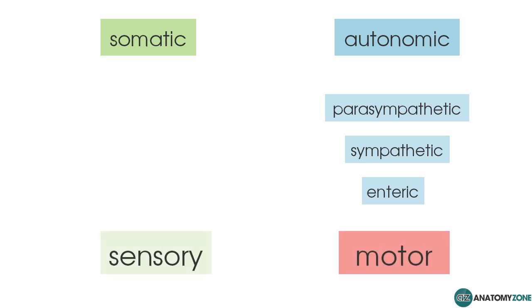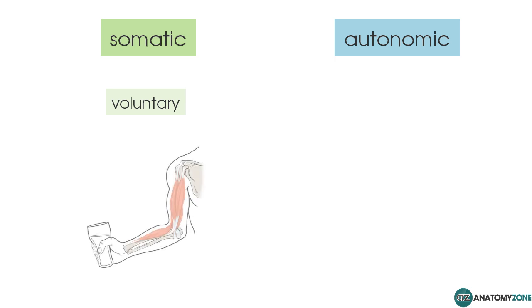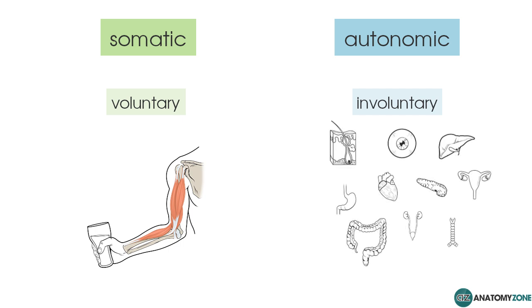The somatic nervous system is responsible for conscious perception and voluntary motor responses — specifically, contraction of skeletal muscle. The autonomic nervous system, on the other hand, is responsible for the involuntary control of the body. It is involved in maintaining our internal environment and homeostasis, regulating that internal environment and keeping everything under control.